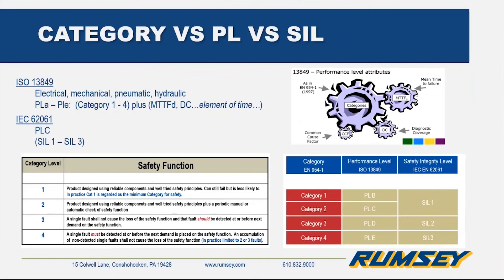They look at all of those things now and develop performance levels and SIL levels instead of categories 1, 2, 3, and 4. When looking at performance levels versus SIL levels, you can see where they correlate — for the most part it's one for one. Generally speaking, I see more people using 13849 than 62061 for two reasons: primarily it's a little bit easier to use, and there are charts in there that are helpful and make it simpler to come up with your performance level rating of the circuit.